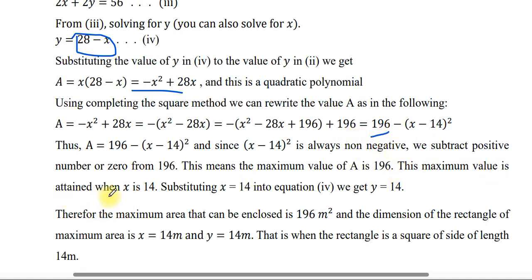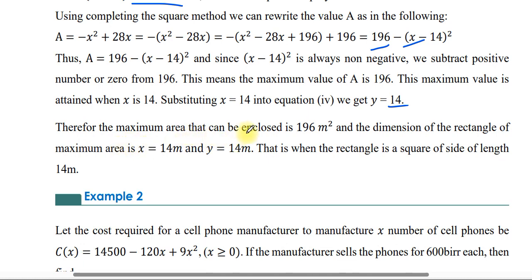The maximum value of A is 196, obtained when X = 14. Substituting X = 14, Y = 28 minus 14 = 14. Therefore the maximum area is 196 square meters and the dimensions of the rectangle are X = 14 meters and Y = 14 meters — the rectangle is a square.